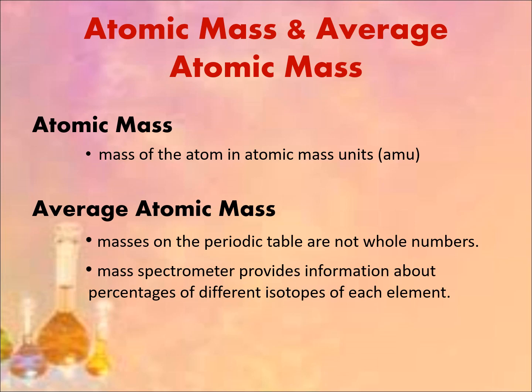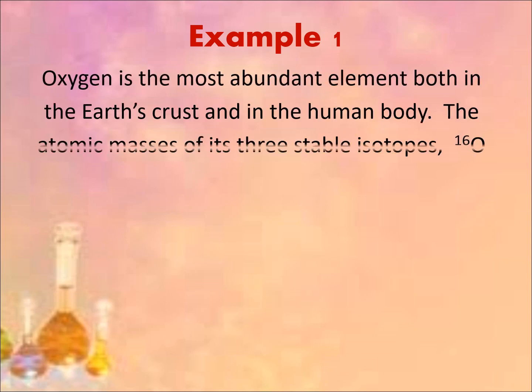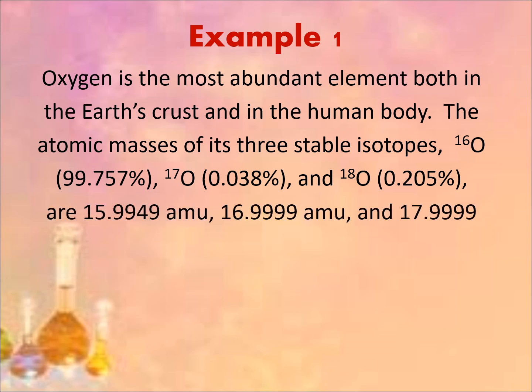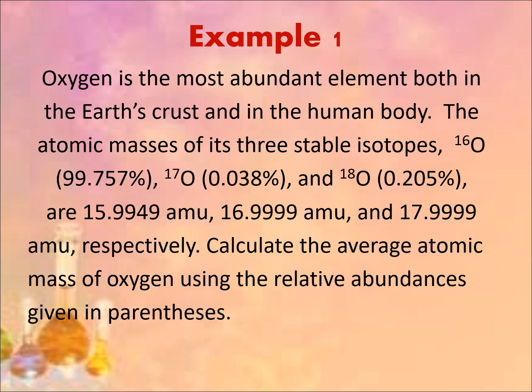A mass spectrometer provides information about percentages of different isotopes of each element. For example, oxygen has three stable isotopes: oxygen-16 with an abundance of 99.757%, oxygen-17 with an abundance of 0.038%, and oxygen-18 with an abundance of 0.205%. Their masses are 15.99, 16.99, and 17.99 atomic mass units respectively.